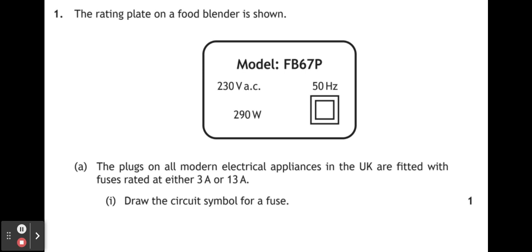Part A, the plugs on all modern electrical appliances in the UK are fitted with fuses rated at either 3 amps or 13 amps. Draw the circuit symbol for a fuse. Well, the circuit symbol for a fuse is that rectangle with the line indicating the wire passing straight through the middle.